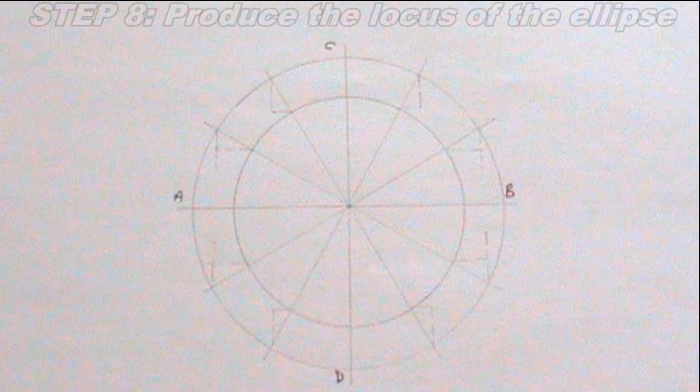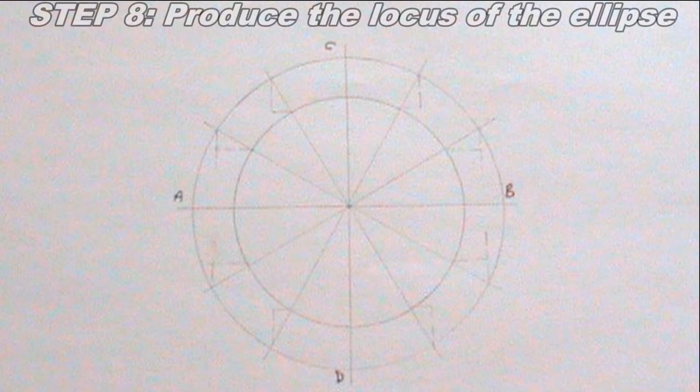I'll be able to produce the locus passing through the points where the horizontal and vertical thin continuous dashes meet. I'm talking about these points I highlighted with red dots.